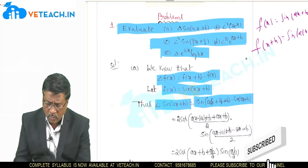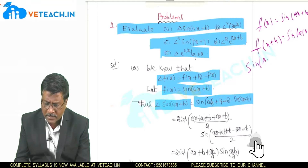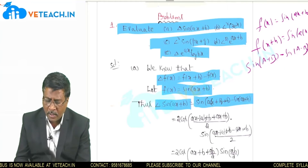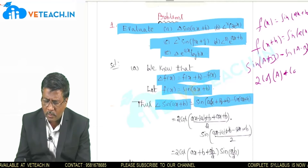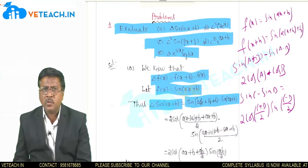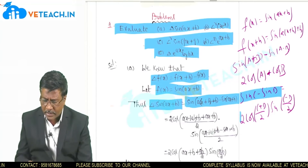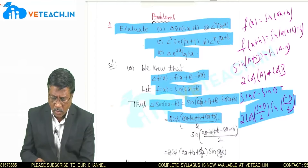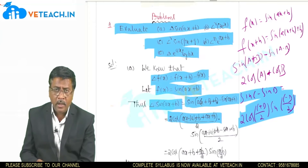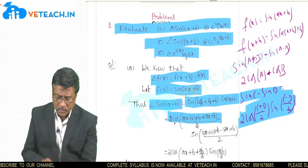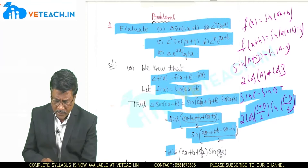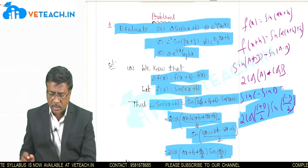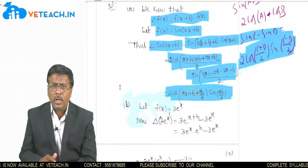We apply the trigonometric formula: sin C − sin D = 2·cos((C+D)/2)·sin((C−D)/2). Here C = a(x+h)+b and D = ax+b. Applying the formula, the result is 2·cos(ax + b + ah/2)·sin(ah/2), since the +b and −b terms cancel. This completes the first forward difference.